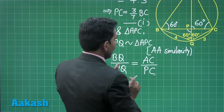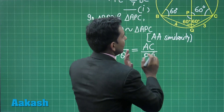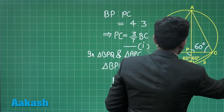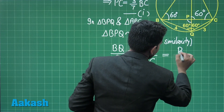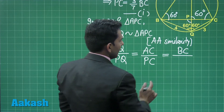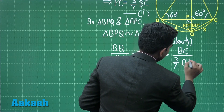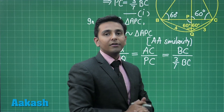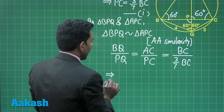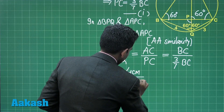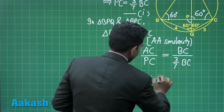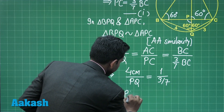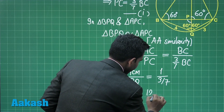Here we can replace AC with BC, because AC and BC are equal sides of the equilateral triangle. We can also replace PC with 3 upon 7 times BC from equation 1. So on the right side, BC cancels from the numerator and denominator. With BQ equal to 4 centimeters, we get PQ equal to 4 divided by 7 thirds, which simplifies to 12 divided by 7 centimeters.